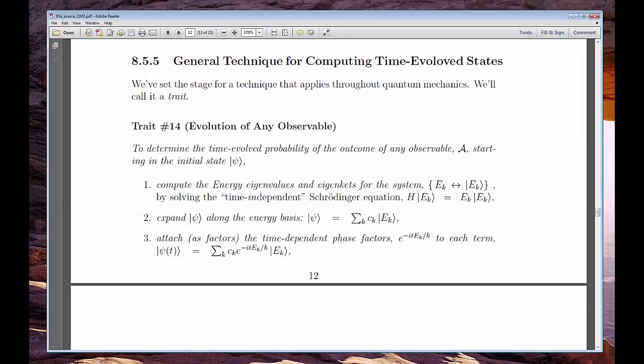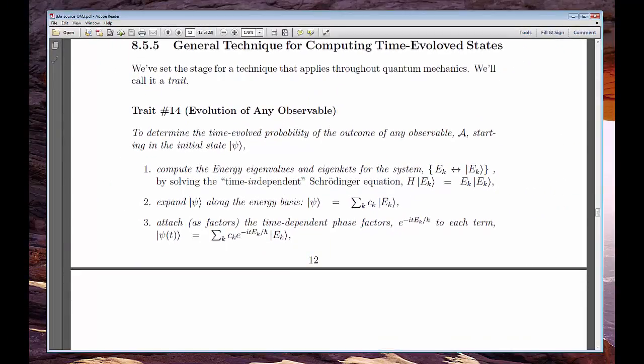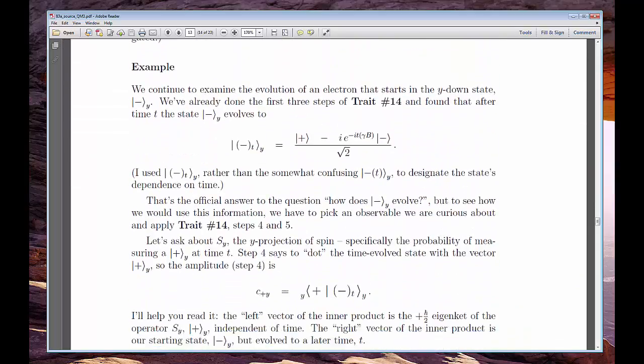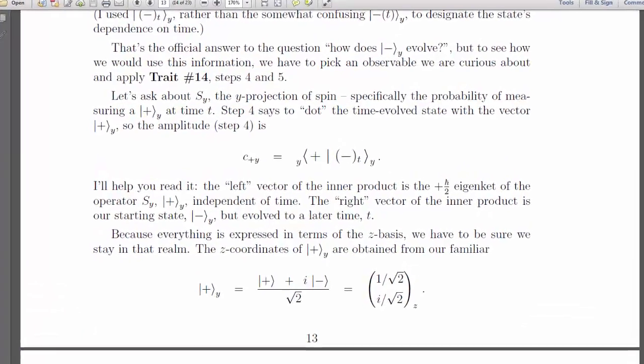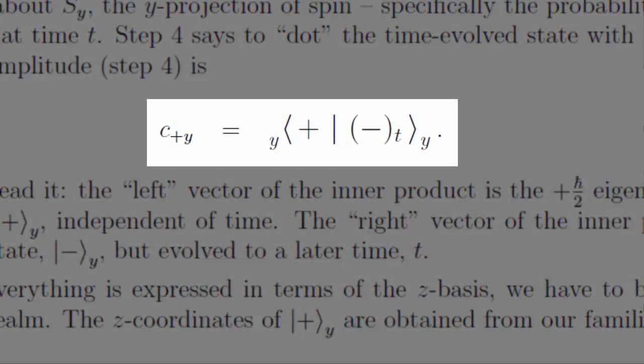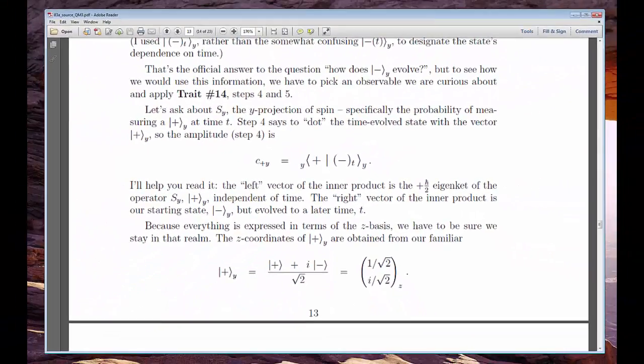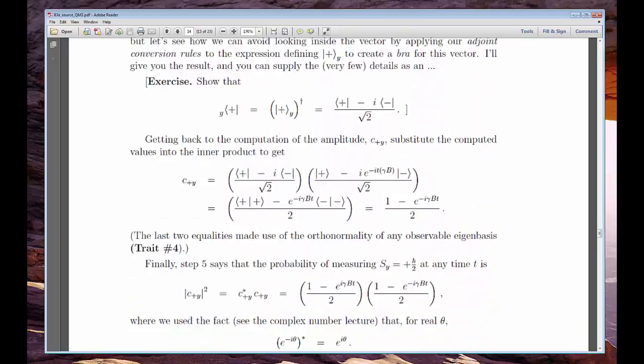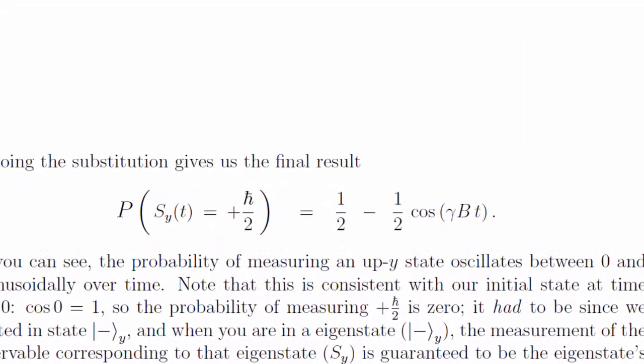Now, energy is nice, but we may want to study one of our other observables, say, Sy. Do we have to do everything all over again? No. We just solved a time-dependent expansion along the energy basis, so all we have to do is convert that solution from the energy basis to the Sy basis. Now it's time to say thank you to our old friend, the dot with the basis vector trick. We take our evolving ket currently expressed in terms of the energy basis and dot it with the two Sy basis vectors to get the coefficients along that basis. Now we know what we can expect to see if we measure this other observable, Sy, at any future time, T.